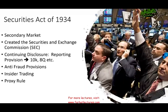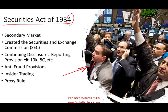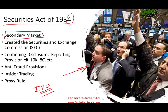Welcome to this session on the Securities Act of 1934. In the prior session, we looked at the Securities Act of 1933. The first thing to think of when you think of the 1934 Act is the stock market — people trading stocks that already exist. So we're looking at the secondary market, which is different from the 1933 Act, which deals with an IPO, an initial public offering. It's important to differentiate the two.